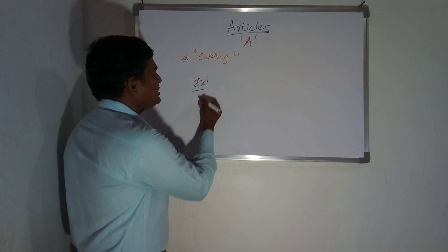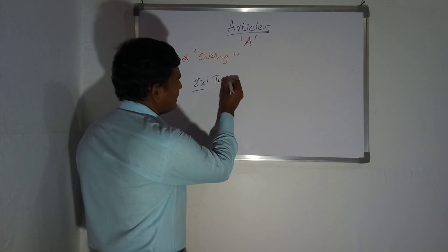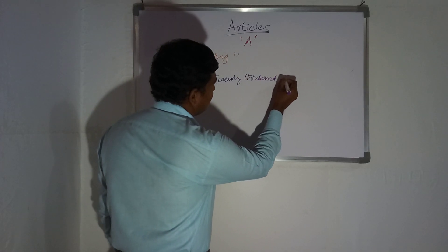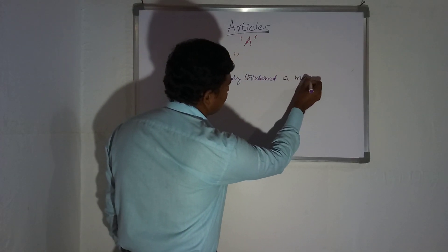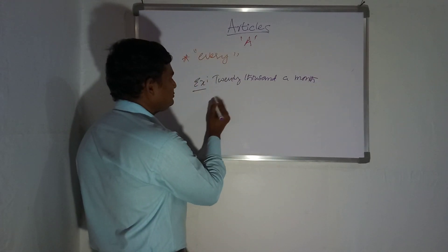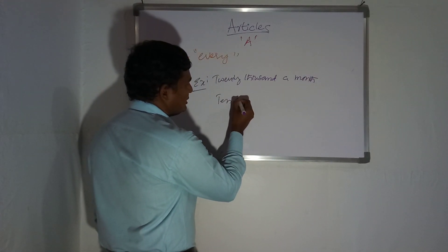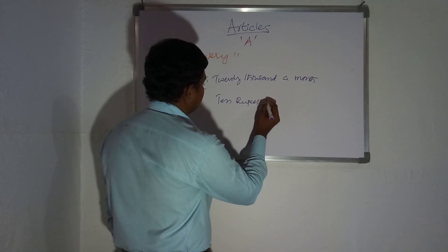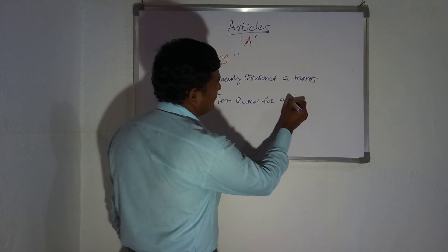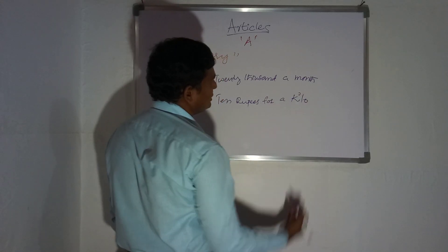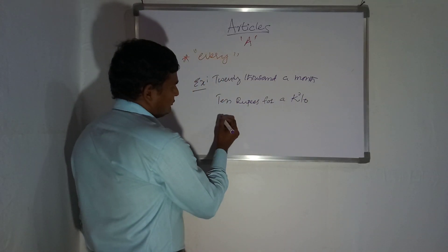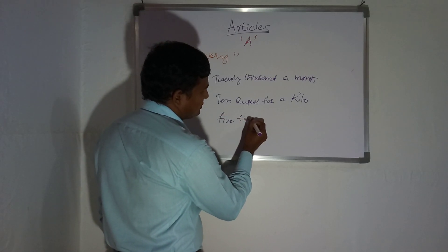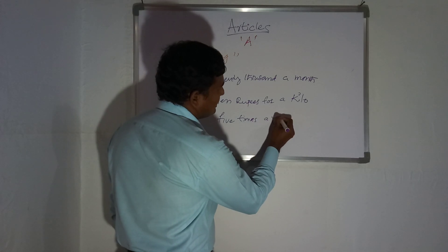Example: So twenty thousand a month. Next: ten rupees per a kilo. So you get five times a year.